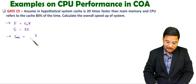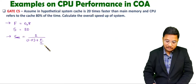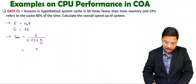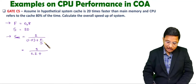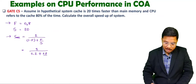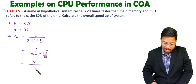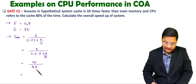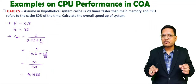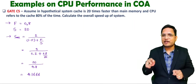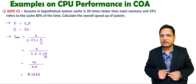As per Amdahl's law, overall speedup = 1 / ((1 - F) + F/S). Substituting: 1 / ((1 - 0.8) + 0.8/20) = 1 / (0.2 + 0.04) = 1 / 0.24 = 4.166. So even though cache memory is 20 times faster, because it is not utilized 100% of the time, overall speedup will not be 20 times — it will be 4.166.